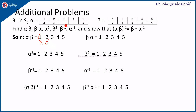Continuing alpha beta: 3 goes to 1 in alpha, and 1 goes to 2 in beta, so 3 goes to 2. Then 4 goes to 4 in alpha, and 4 goes to 3 in beta, so 4 goes to 3. Finally, 5 goes to 5 in alpha, and 5 goes to 4 in beta, so 5 goes to 4. This is your alpha beta.